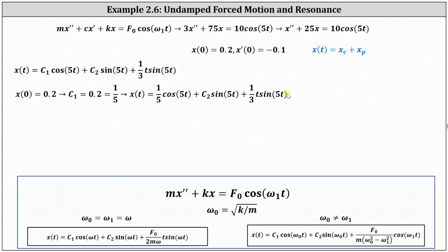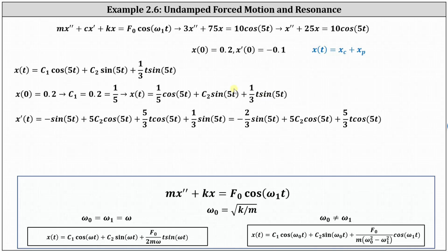The next step is to find x'(t) so we can use the initial condition x'(0) = −0.1 to determine c₂. For the first two terms we apply the chain rule; for the third term we apply both the product rule and the chain rule. This gives x'(t) = −(2/3) sin(5t) + 5c₂ cos(5t) + (5/3)t cos(5t). You may want to pause the video and verify this derivative.